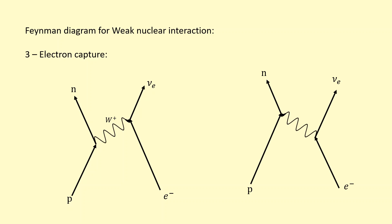I could have drawn this diagram with the exchange particle in a different position, but in that case I'd have to write W-minus instead. One way to figure out which boson it is: conserve charge at every point in time. If I take a slice, the proton has charge plus one and the electron has charge minus one, so overall it's zero. Taking a slice in the middle — which is why it's important to draw it slanted — there's still a proton giving plus one, a neutrino on the right giving zero, so the exchange particle must be minus one to keep the total at zero. Checking the end: zero plus zero, overall charge is still zero. That's how you determine whether it's W-plus or W-minus.